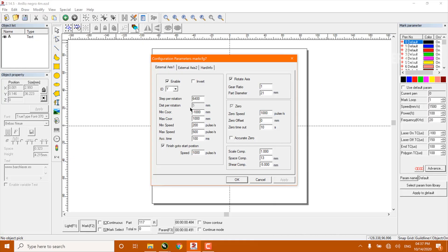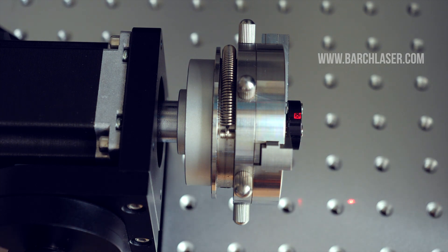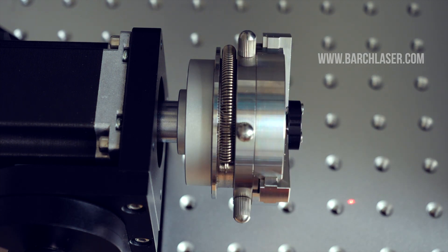Fill in the diameter size of the object in the box part diameter. In this case, the diameter of our ring is 21 millimeters. Then we press F1 to see the engraving area of our ring and set it up in the center.